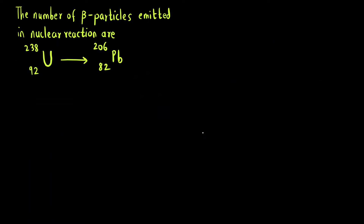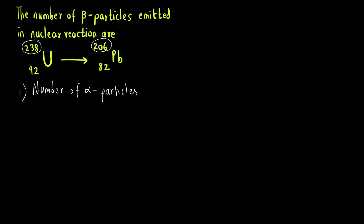Before finding out the number of beta particles, you can see that the atomic mass has decreased. So the first step is we have to calculate the number of alpha particles. We have to find the intermediate species or nuclei that are formed, so we first find out the number of alpha particles emitted.